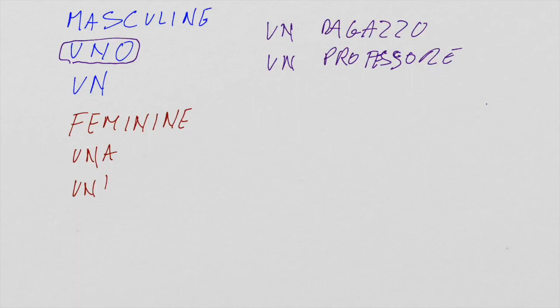But we also use UN in front of nouns starting with vowel. UN AMICO. So UNO with Z, S plus consonant, and PS, and UN for all the other cases.